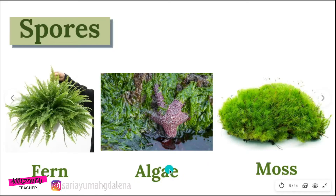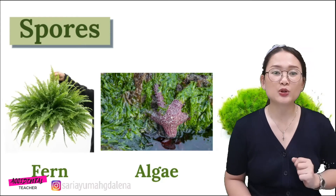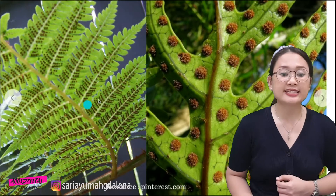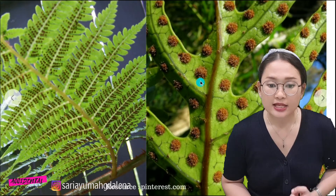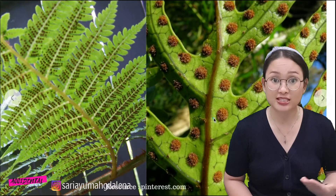Some examples of plants which produce spores to reproduce are fern, algae, and moss. These kinds of plants are very familiar in our environment. Let's look at how spores look like. The spores of the fern are located at the back side of the leaves. If we look closer, we can see the boxes of spores, and inside there is spore powder. Once it is ready, it will explode and the spores will disperse far from their parent plants.